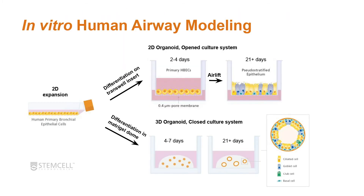Here is a diagram of what you would expect for in vitro human airway modeling. After expanding cells in 2D in a flask, you can split them and either plate on a transwell insert or into a Matrigel dome for 2D or 3D organoid systems. With the 2D organoid, you expand cells for a few days in expansion media. When confluent, you airlift them — removing media from the apical side — and let them differentiate for a few weeks. By 21 days, you see different cell types such as goblet cells and ciliated cells present in the large airway.